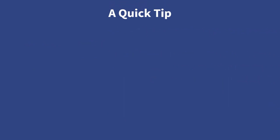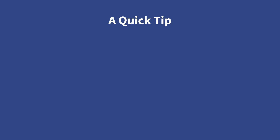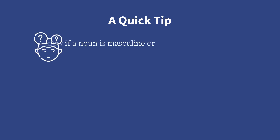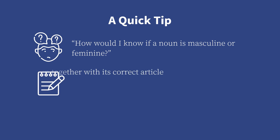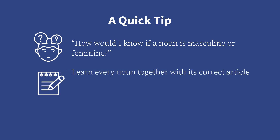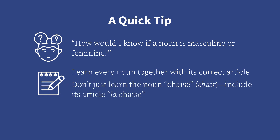Before we wrap up this lesson, I'd like to share a quick tip for learning nouns and their gender. You might have asked yourself, how would I know if a noun is masculine or feminine? The truth is, the gender of French nouns is very challenging to guess. What you can do to learn them faster is to learn every noun together with its correct article. For example, don't just learn the noun chaise, which means 'chair,' but rather include its article — la chaise.